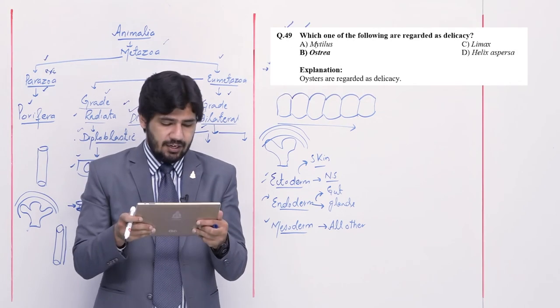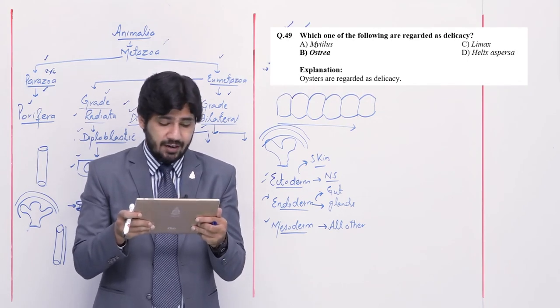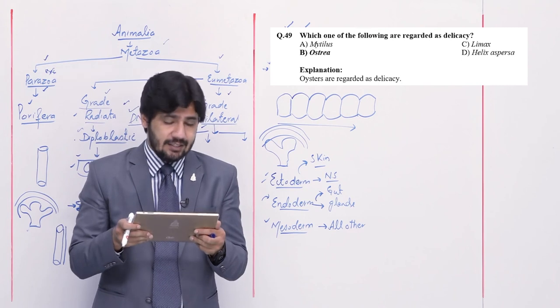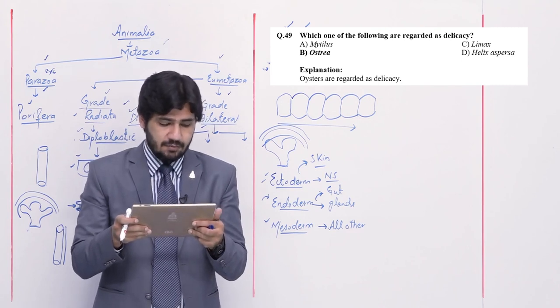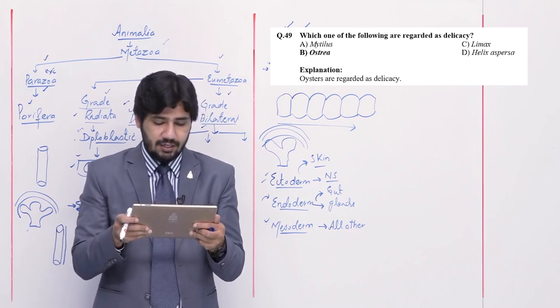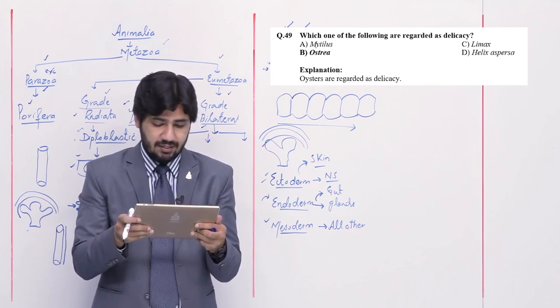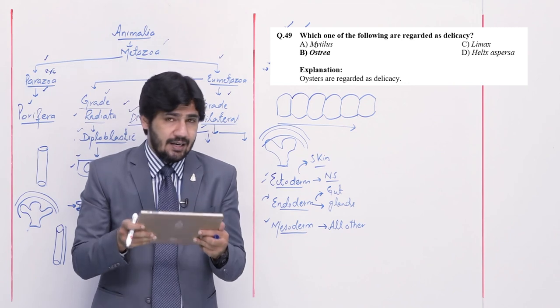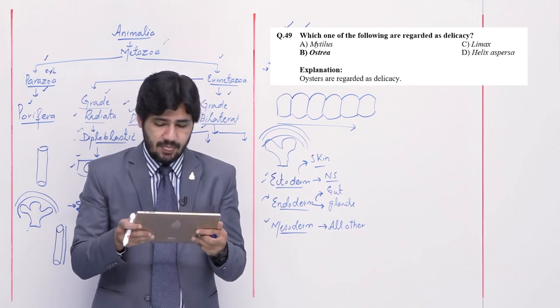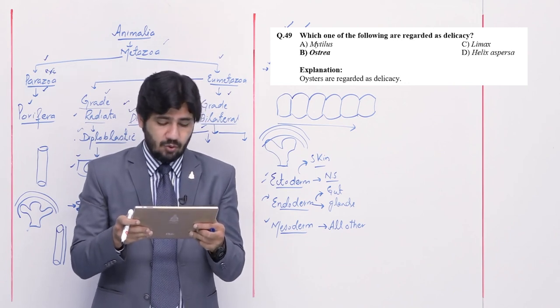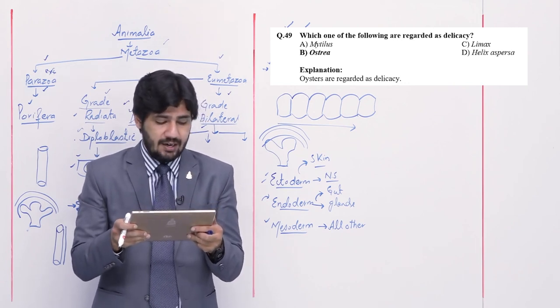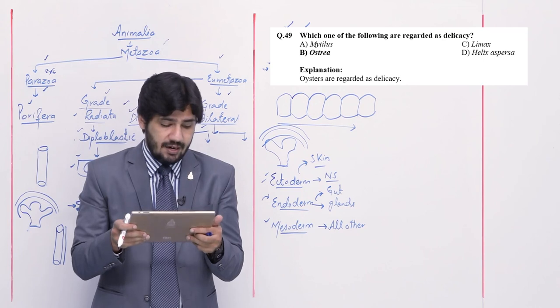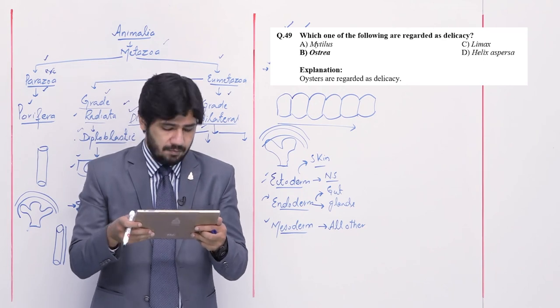Question number 49: which one of the following is regarded as a delicacy — alpha Mytilus, beta Ostrea, charlie Limax, and delta Helix aspersa. The delicacy reference is oyster — Ostrea. Right option is beta.